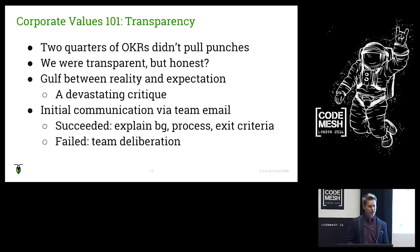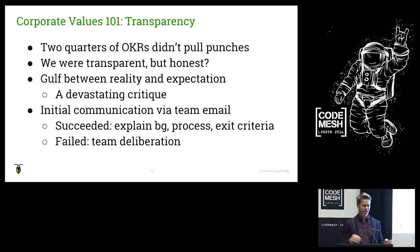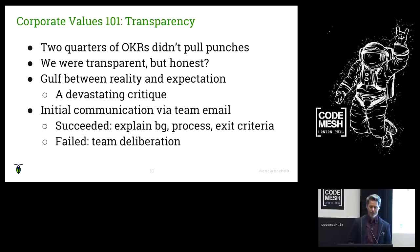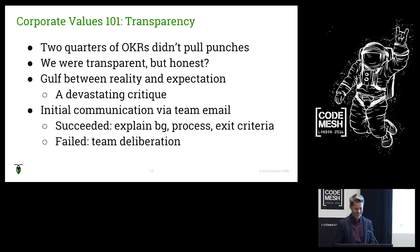One of our core values at Cockroach is transparency, and we take it seriously. We do OKRs and grade them fairly. If you look at our Q2 OKRs, there's a big red zero on the stability one. But I'd say we weren't being honest — particularly honest with ourselves — about how severe the problem was and how existential it was to the company. One devastating signal: stability had become a punchline internally. If someone made a joke about stability, everyone laughed. That's an insidious loss of confidence for the team.